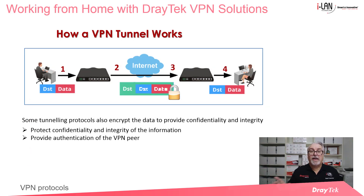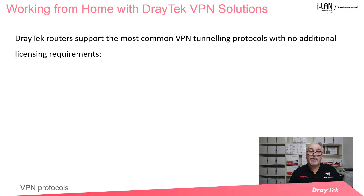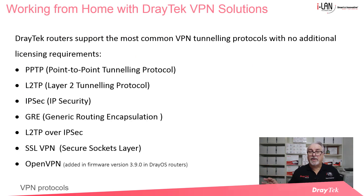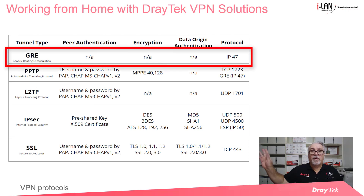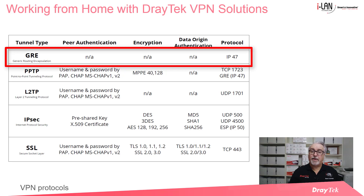As shown in this diagram, the routers at each end of the VPN tunnel encrypt and decrypt the data as it is sent and received. Draytek routers include the most common VPN tunneling protocols with no additional licensing requirements. OpenVPN was added from firmware version 3.9.0 in DrayOS routers. At the top of the security features table we have GRE or Generic Routing Encapsulation, a basic protocol offering no encryption or peer authentication. GRE is used where IP tunneling without privacy is required – it's simpler and faster – and it's also used inside an IPsec VPN tunnel in Draytek's VPN load balancing feature.